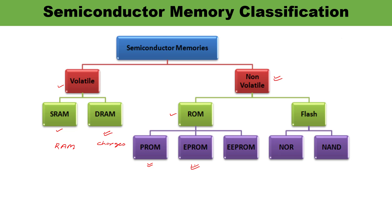The next type is EPROM — Erasable Programmable Read-Only Memory. It also offers reprogramming by erasing previously stored data, and here erasing is done using ultraviolet rays. The memory erasing time lies between 10 to 30 minutes, which gives you an idea of how much time is required to erase the data.